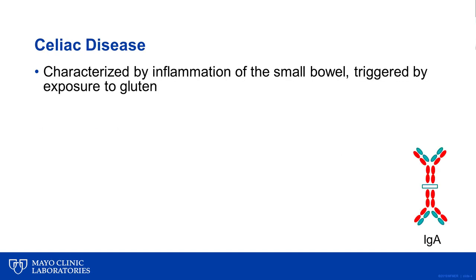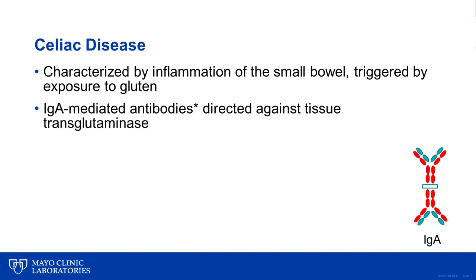Celiac disease is characterized by inflammation of the small bowel that is triggered by exposure to gluten in the diet. Celiac disease is usually mediated by IgA antibodies that are directed against tissue transglutaminase.